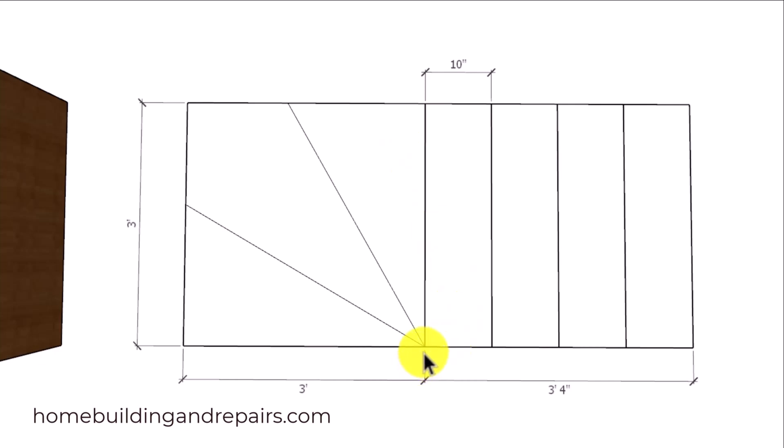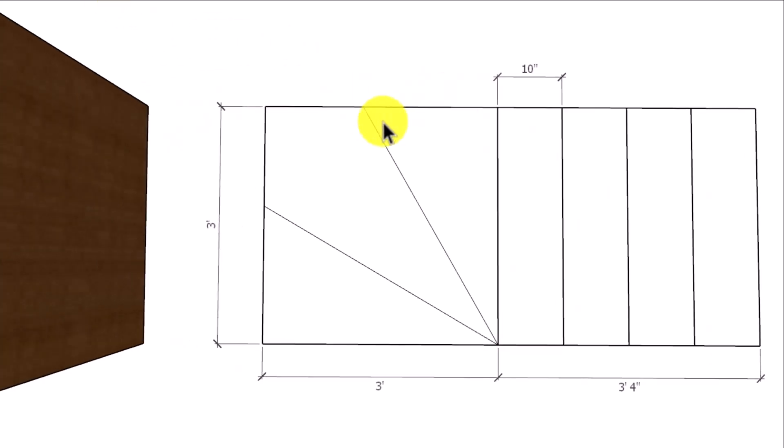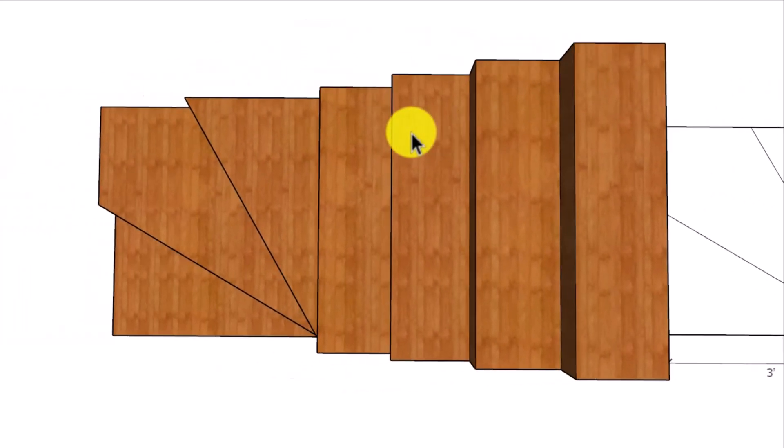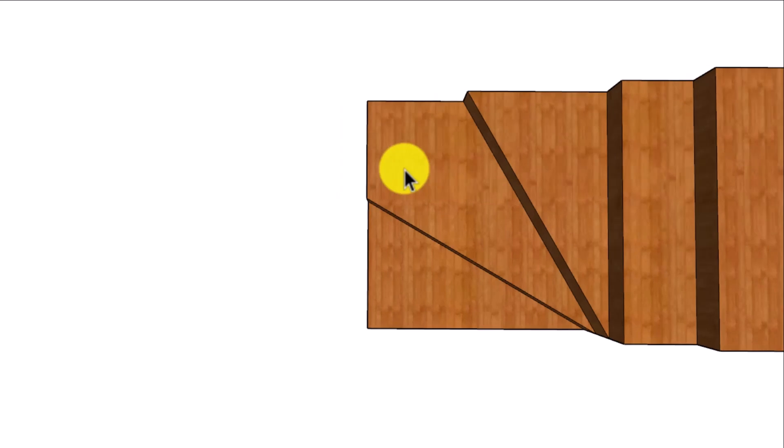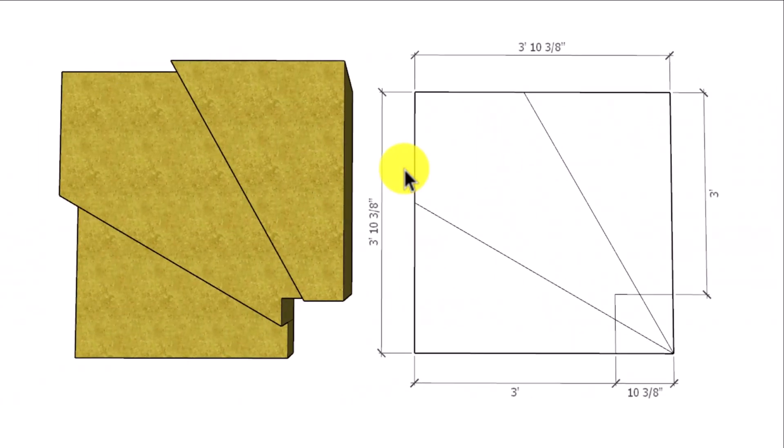So let's go ahead and take a look at the winder steps dying into one point here along with a three foot wide stairway and 10 inch treads. I have built plenty of stairs like this before they changed the building codes. I'm not going to go over all the reasons why these stairs are unsafe. However, the newer building codes require a six inch minimum measurement at the smallest section of the stair treads. That would be this area right here.